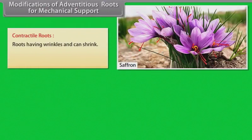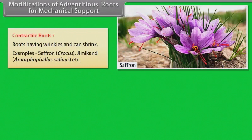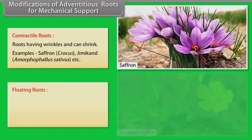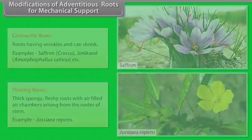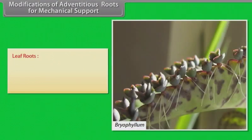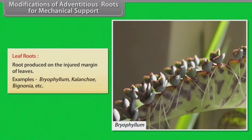Contractile roots — roots having wrinkles that can shrink. Examples: saffron, Crocus. Floating roots — thick, spongy, fleshy roots with air-filled chambers arising from the nodes of stem. Example: Jussiaea. Leaf roots — roots produced on the injured margin of leaves. Examples: Bryophyllum, Bignonia, etc.